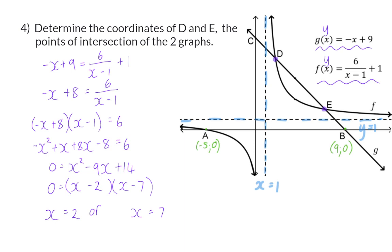So D's x value would be the value of 2 and 7 would be the x value of E. Now, these x values can be substituted into either the straight line or hyperbola's equations to calculate the y values.